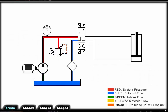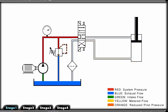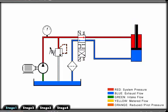Meter in is the method of placing a flow control valve in such a way that fluid is restricted to the actuator. In this circuit, without a flow control valve, the cylinder extends and retracts at an unrestricted rate.